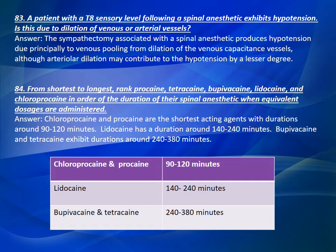Question 84: From shortest to longest, rank procaine, tetracaine, bupivacaine, lidocaine, and chloroprocaine in order of the duration of their spinal anesthetic when equivalent dosages are administered. Chloroprocaine and procaine are the shortest-acting agents with durations around 90 to 120 minutes. Lidocaine has a duration around 140 to 240 minutes. Bupivacaine and tetracaine exhibit durations around 240 to 380 minutes.